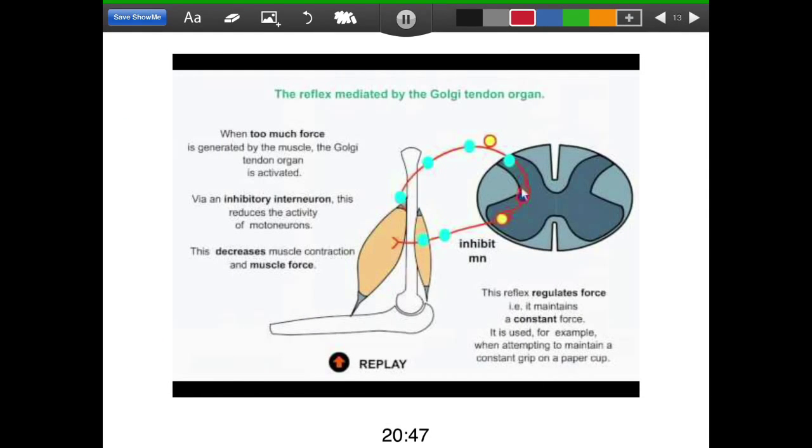So another spinal reflex that we have is one that's controlled by the Golgi tendon organ. As we said earlier, when too much force is generated by a muscle, a Golgi tendon organ—as you can see just right here—is going to be activated by the bicep tendon being contracted. This, in turn, is going to travel up to the spinal cord.